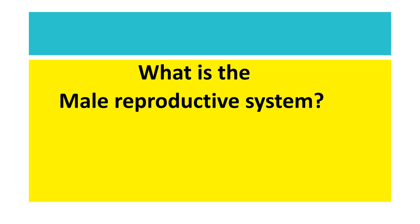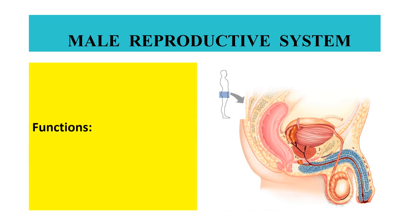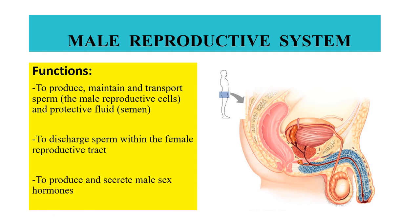The male reproductive organs are specialized to perform the following functions. First, to produce, maintain, and transport sperm — the male reproductive cells — and protective fluid semen. Second, to discharge sperm within the female reproductive tract, and to produce and secrete male sex hormones.